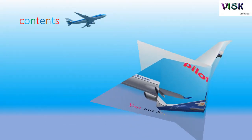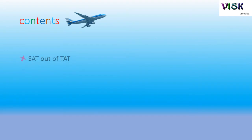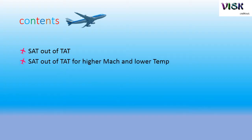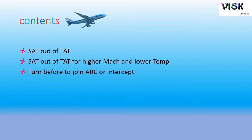For the content today, I will talk about static temperature out of total temperature — how to calculate static temperature out of total temperature for higher Mach, much, and lower temperature. Turn before to join arc or intercept. This is a formula I always used when I was a student pilot. It's very accurate.